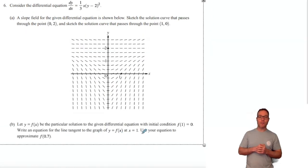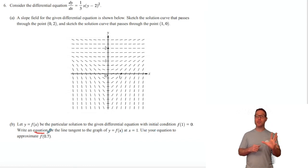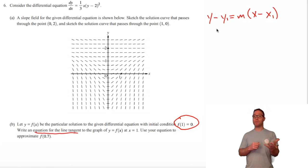Part B says let y = f(x) be the particular solution. Write an equation for the line tangent. Whenever you see that phrase, what you should write down is the point-slope form of a line: y - y₁ = m(x - x₁). All you need is a point and a slope. They give you a point (1,0), so I'm going to plug those in for y₁ and x₁. I have y - 0 = blank(x - 1). What goes in the blank space is the derivative. M represents slope, and slope is the derivative.